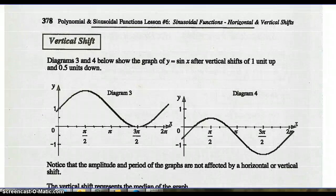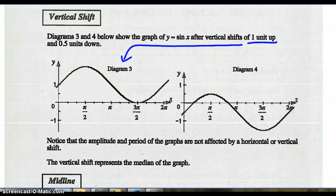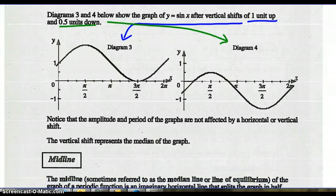Let's look at vertical shifts now. Diagrams 3 and 4 show the graph of sine x after vertical shifts of one unit up and a half unit down. One unit up is diagram 3, half a unit down is diagram 4. Notice that the amplitude and the period of the graphs are not affected — amplitude is still 1, period is still 2 pi. It takes 2 pi units to complete a full cycle.